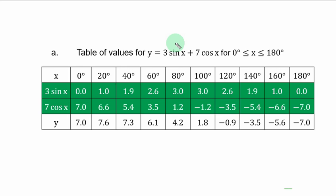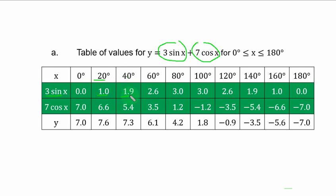To complete the table, you need to compute 2 things: 3 sine s and 7 cos s, after which you add them together. Take the first term, 3 sine s. When s is 0 degrees, you check sine 0, and that is 0. Multiply it by 3, you also have 0. When s is 20 degrees, you check sine 20 degrees and multiply it by 3, maintaining 1 decimal place, and you have 1.0. Then you check sine 40 degrees times 3, you have 1.9.